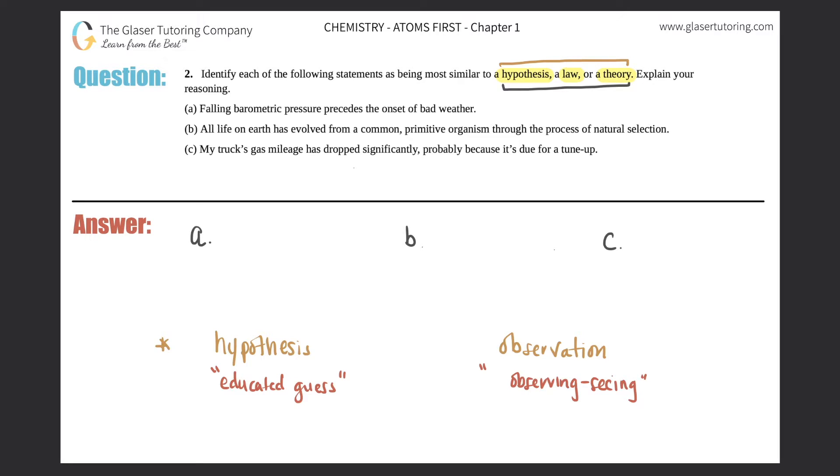Now these two things will turn into either a law or a theory. Now a hypothesis will always turn into a theory. On the other hand, observations, if they keep happening over and over and over again, will always turn into law.